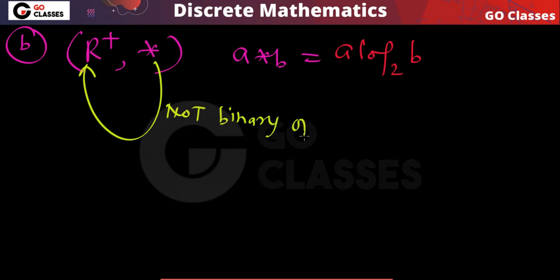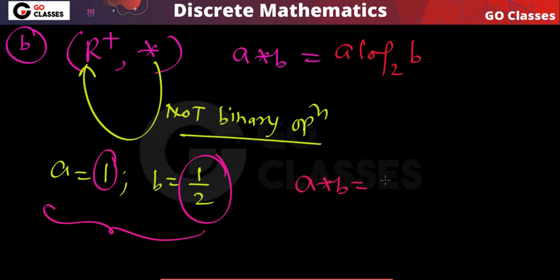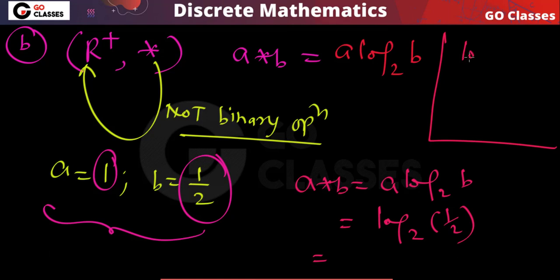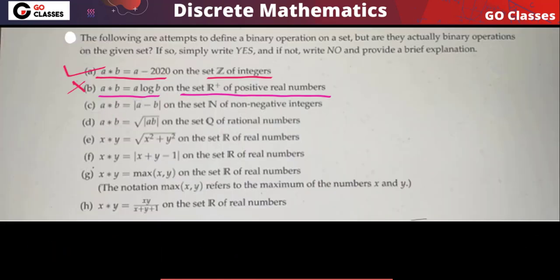For example, take a equal to 1 and b equal to 1/2. Both are positive real numbers. Then a star b equals a log base 2 of (1/2). Using the rule log(m/n) = log m minus log n, we get log 1 minus log 2 base 2, which equals 0 minus 1 = minus 1. This minus 1 does not belong to the set of positive real numbers, so this is not a binary operation.